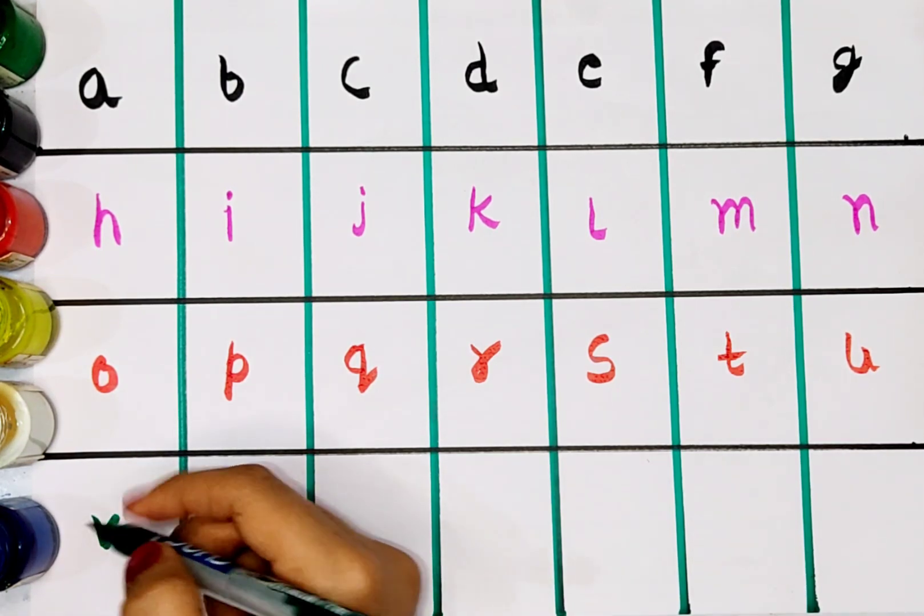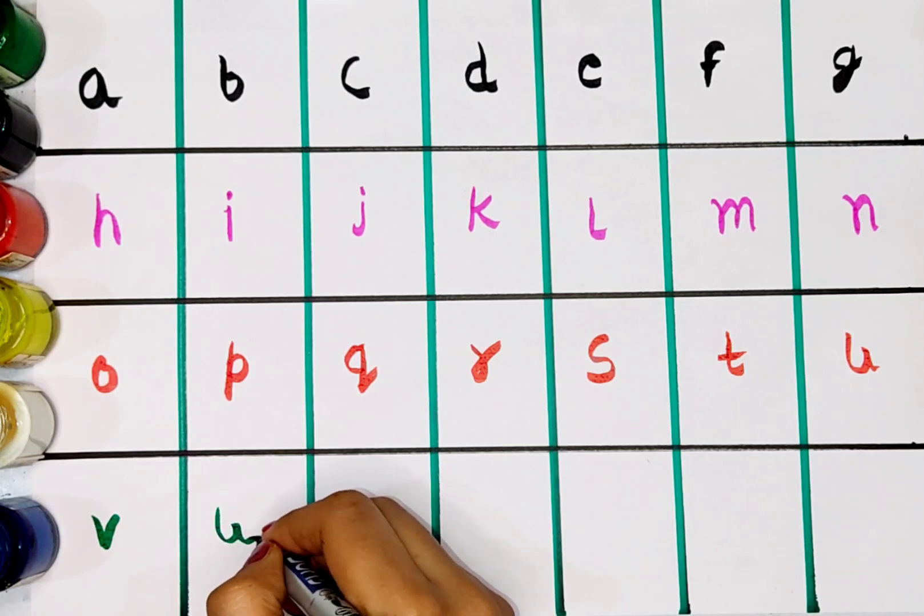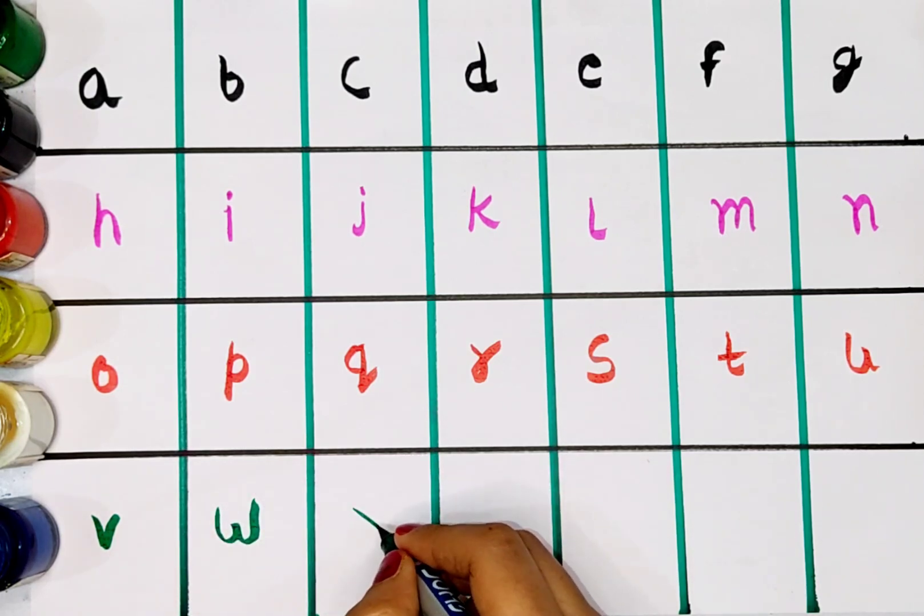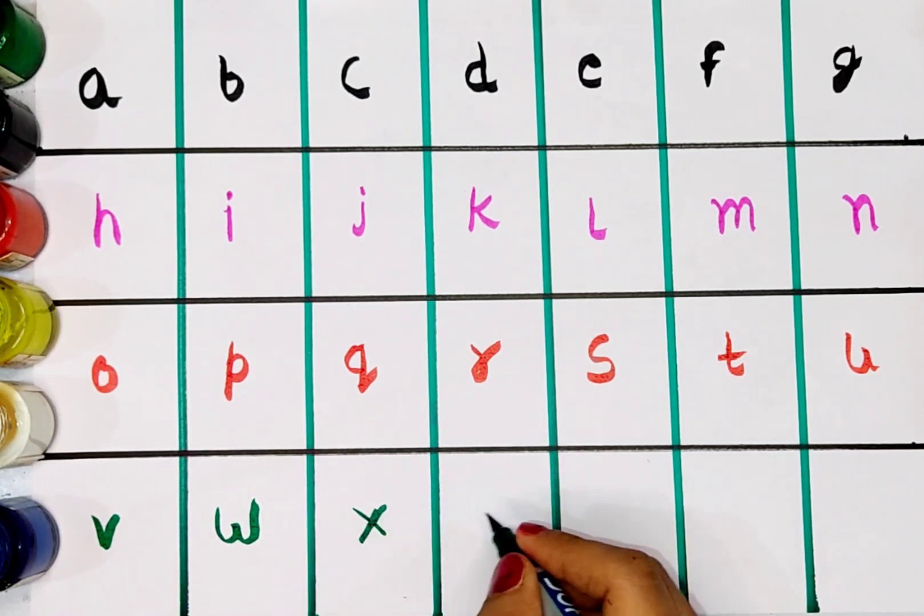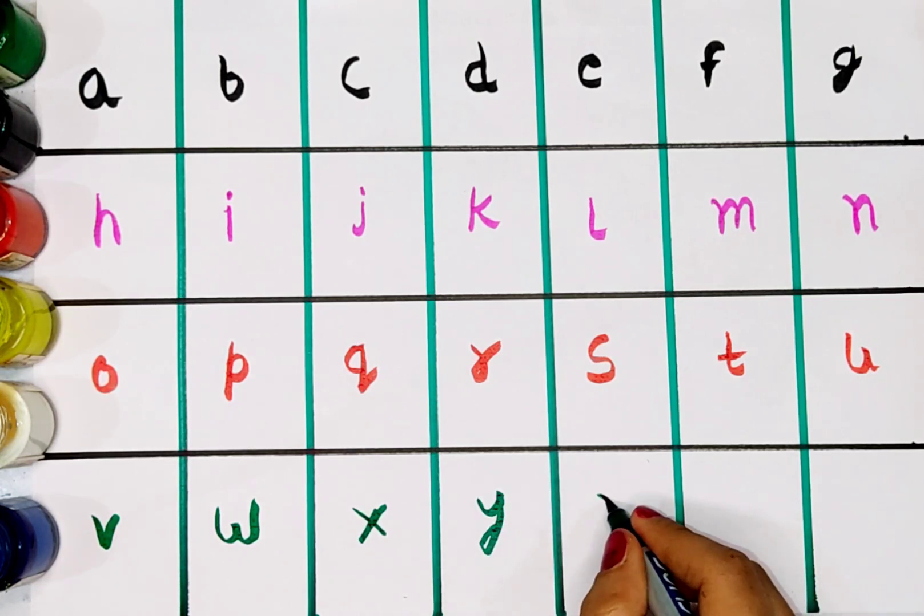V. V for vein. W. W for watermelon. X. X for xylophone. Y. Y for yard. Z. Z for zebra.